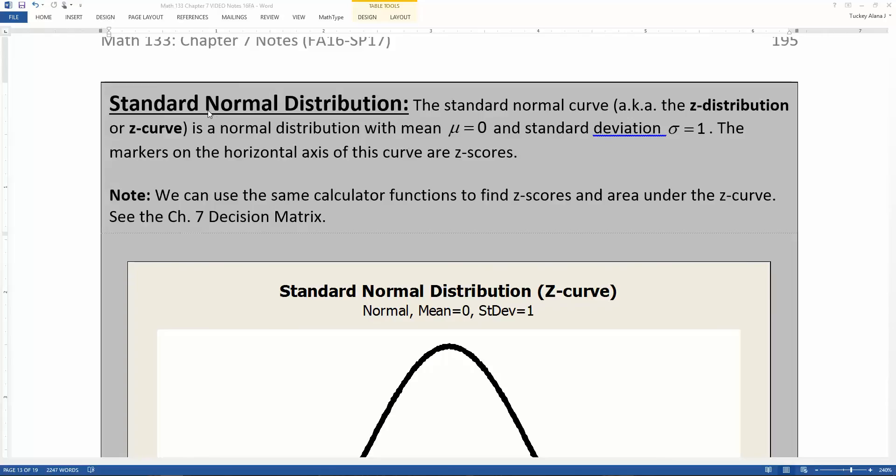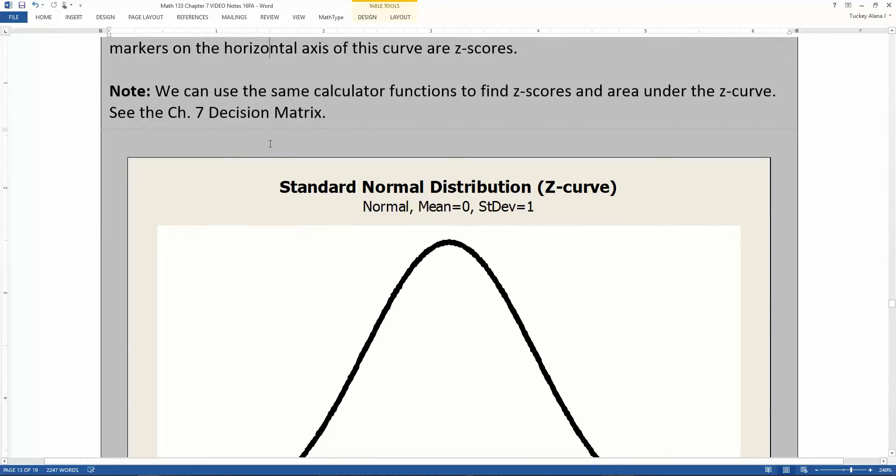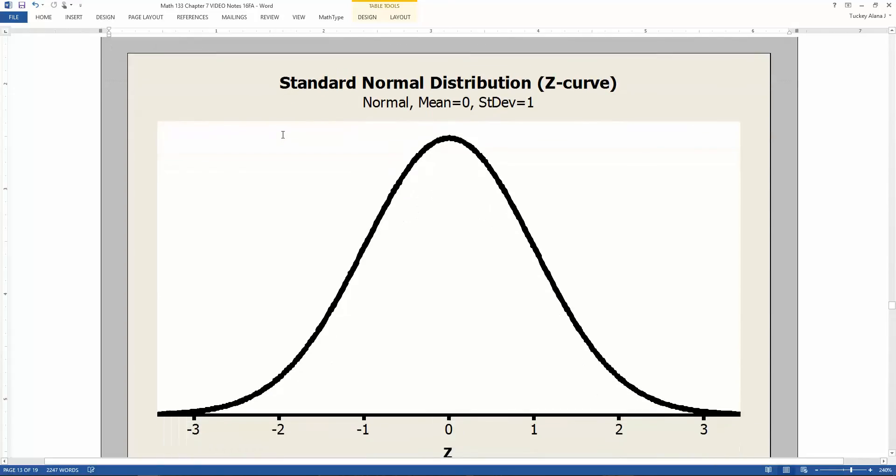If you remember z-scores back in chapter 3, z-scores let you know how many standard deviations away your score is from the mean. That means that if you actually score at the mean, your z-score would be zero. If you score one standard deviation above the mean, your z-score would be one, two standard deviations above the mean would be two, and so on. So this creates its own normal distribution called the standard normal distribution, or for short, the z-curve, the z-distribution.